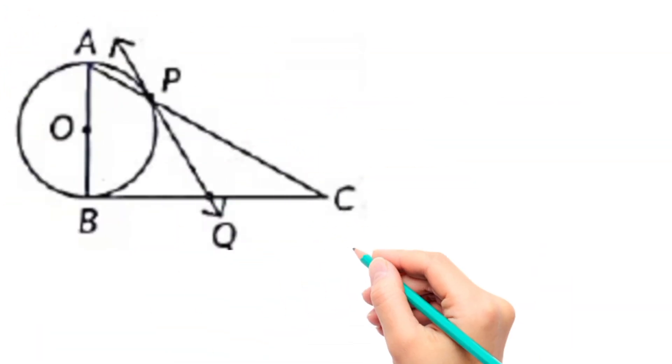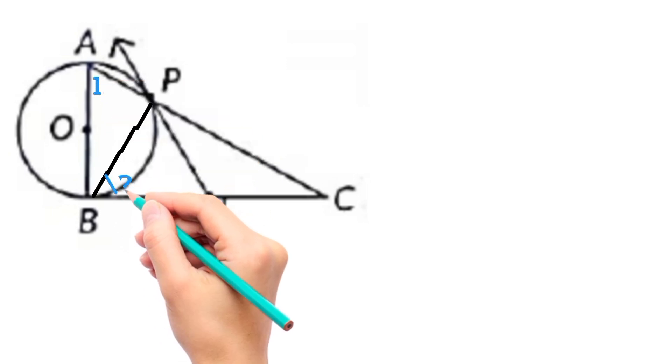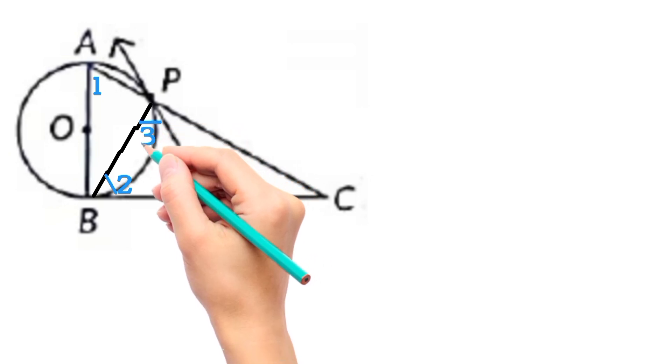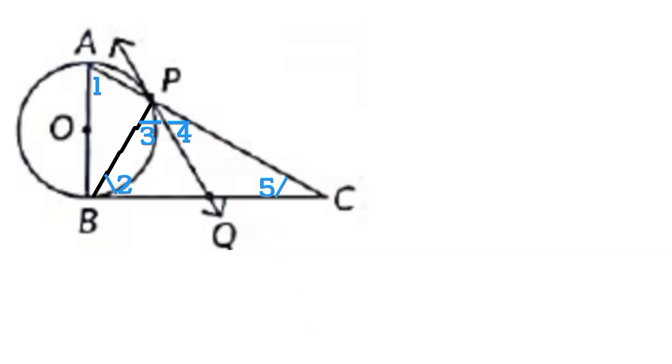Let us take the figure again. Now we will join BP and name angle BAP as angle 1, angle QBP as angle 2, angle BPQ as angle 3, angle QPC as angle 4, and angle BCP as angle 5.